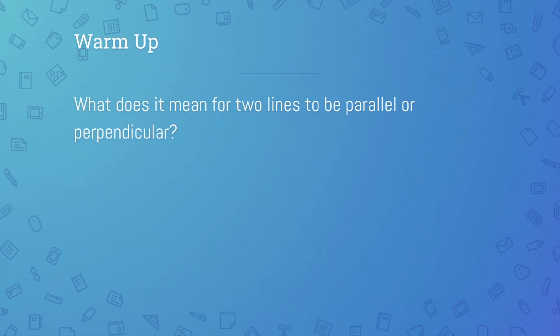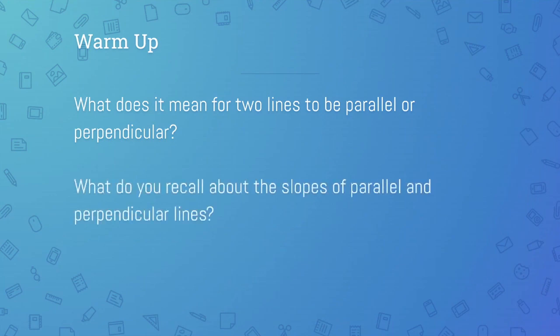Go ahead and hold up your arms and show me parallel lines. Your arms are kind of right next to each other. Now show me with your arms perpendicular — you make a cross, an X, a T, something like that. Let's stretch your memory: what are the slopes of parallel lines? In slope-intercept form y equals mx plus b, m is the slope, and parallel lines have equal slopes — their m's are equal.